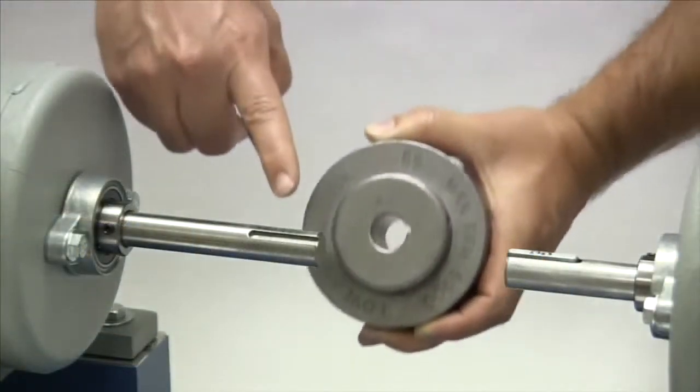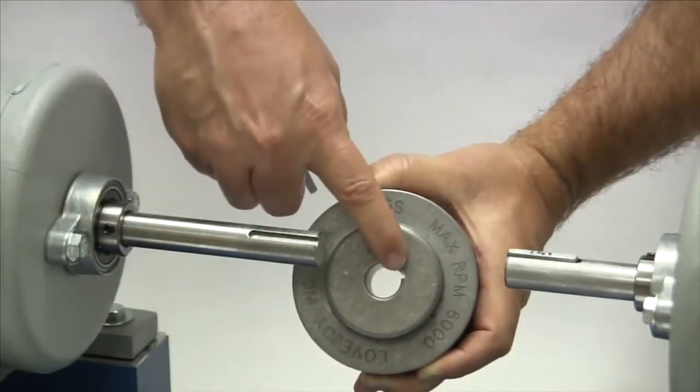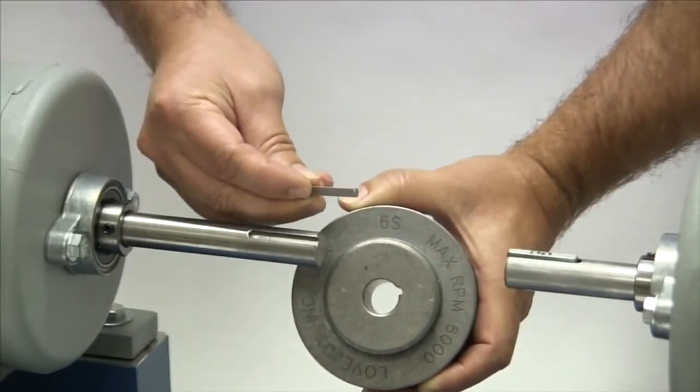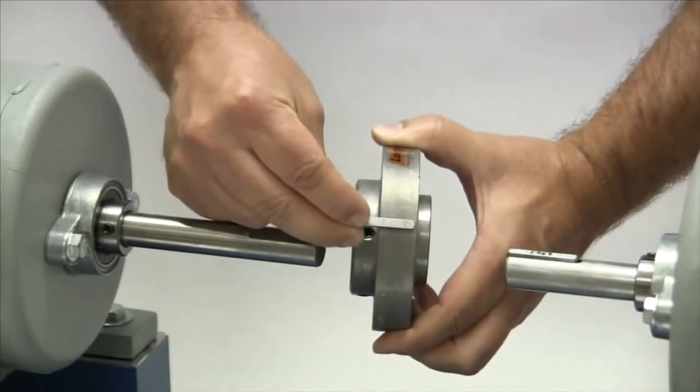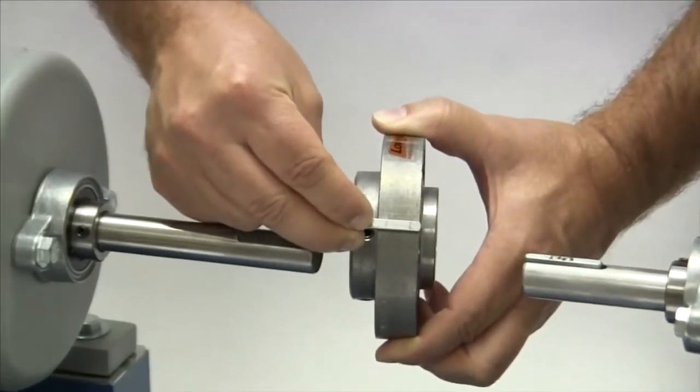If the shaft and the flange both have keyways, make sure you have the appropriate key ready to use when performing this installation. Ideally, the key should be the same length or slightly longer than the flange to transmit the maximum allowable torque.